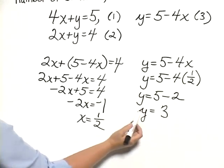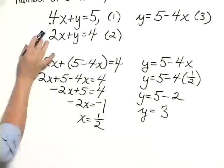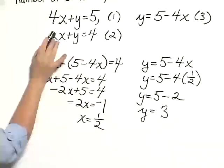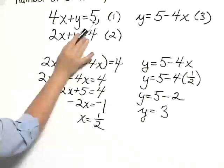I want to check that in both of my original equations. So let's just mentally check that. 4 times 1 half is 2, 2 plus 3 is 5. That checks.